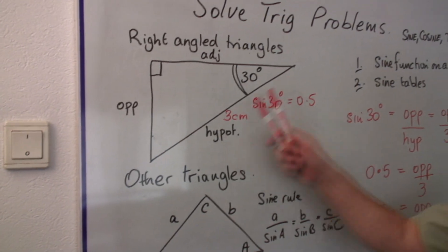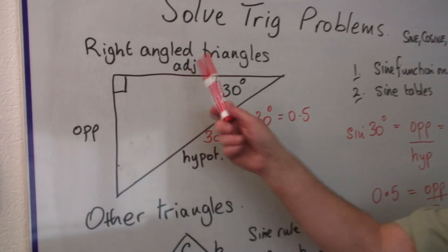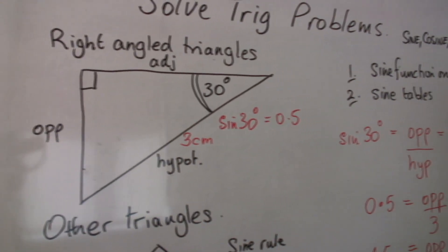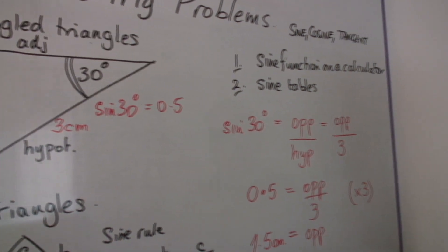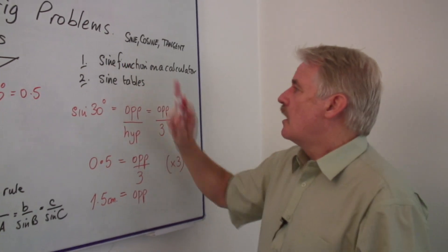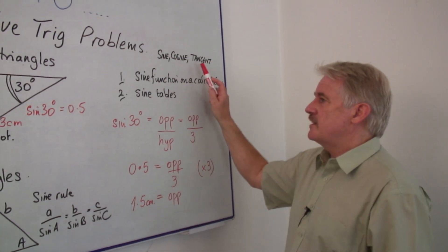Now that is a simple right-angle triangle, and we can work out the other values. But remember, we have three different functions: we have a sine function, a cosine function, and a tangent.